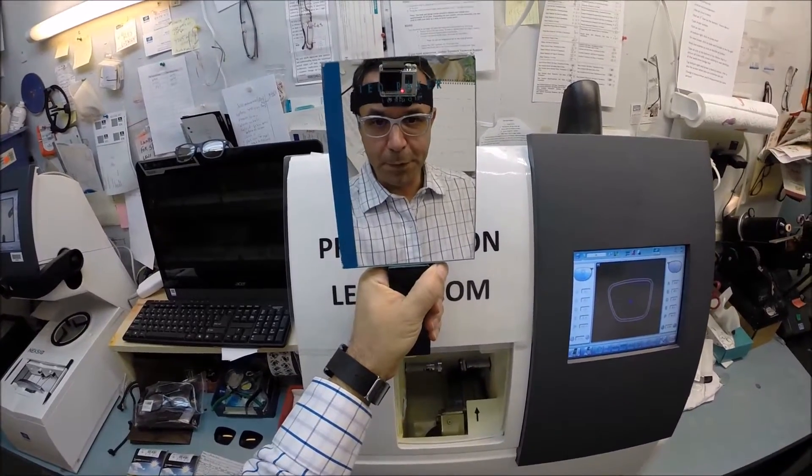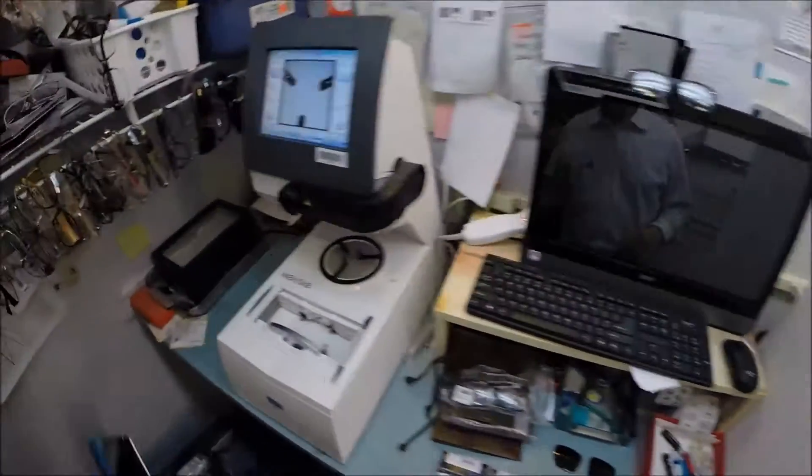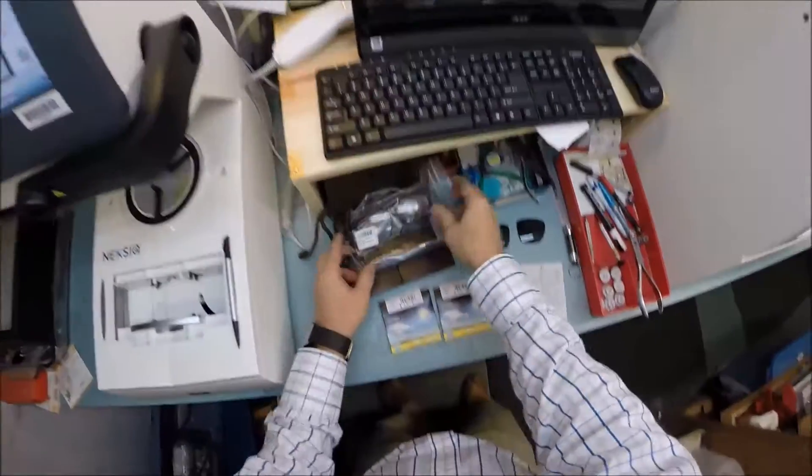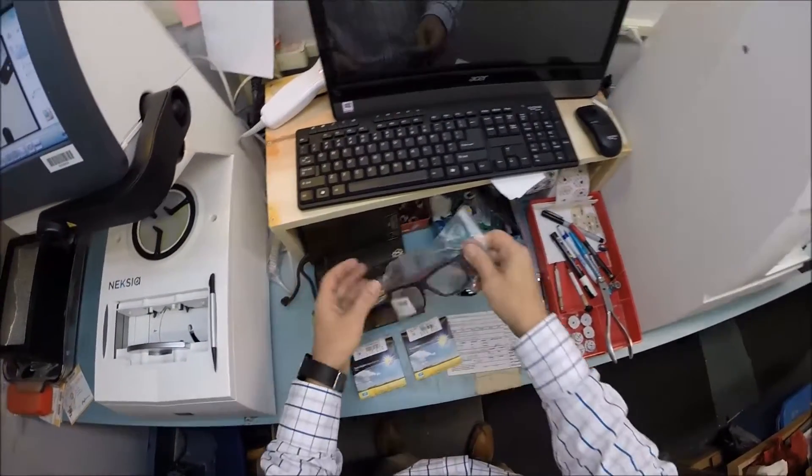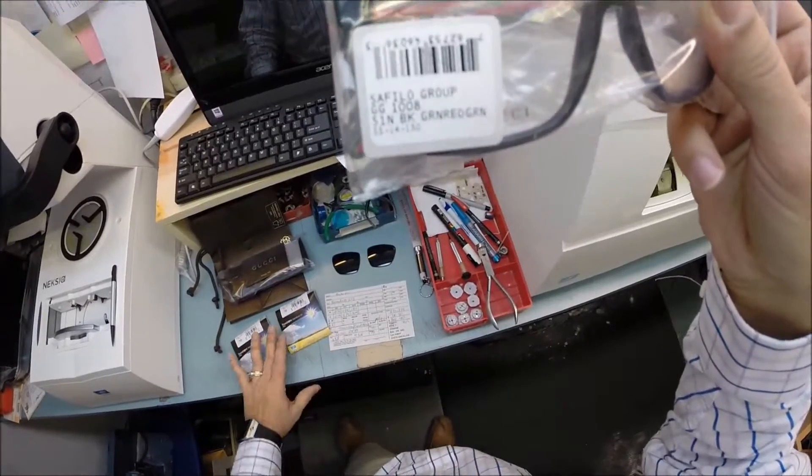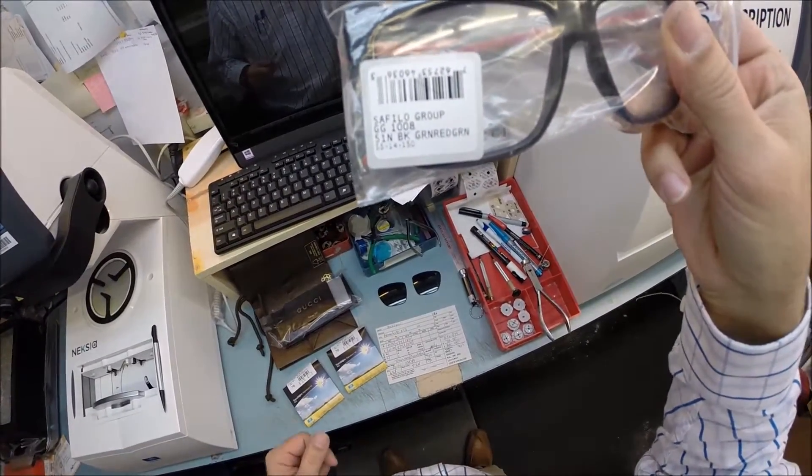Hey Andrew in Bloomfield, New Jersey. Matthew here with freeprescriptionlenses.com and with the help of my GoPro camera, I'm gonna show you how I cut prescription lenses with Transition 7 gray lenses and Crizal Alize for your new Gucci 1008, size 55, in the color 5-1-N.